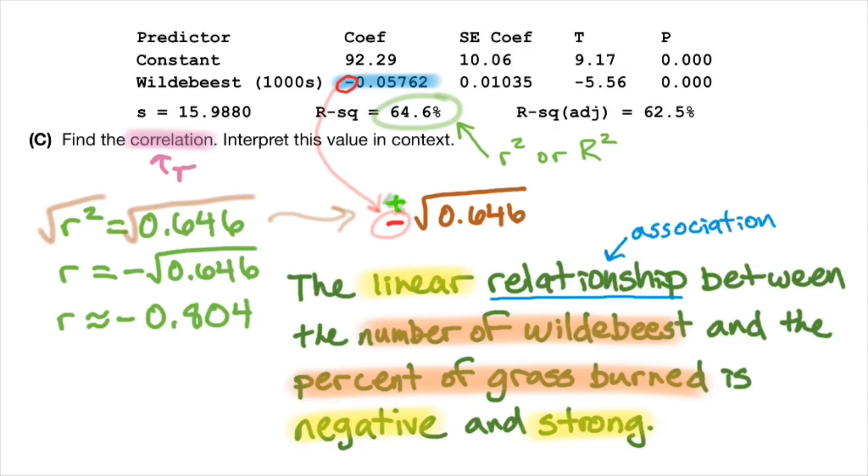And just one other note is that instead of saying the word relationship, you could also say the word association. In this course, relationship, association, they're pretty interchangeable. But remember, the word correlation is reserved specifically for the measurement of linear strength.